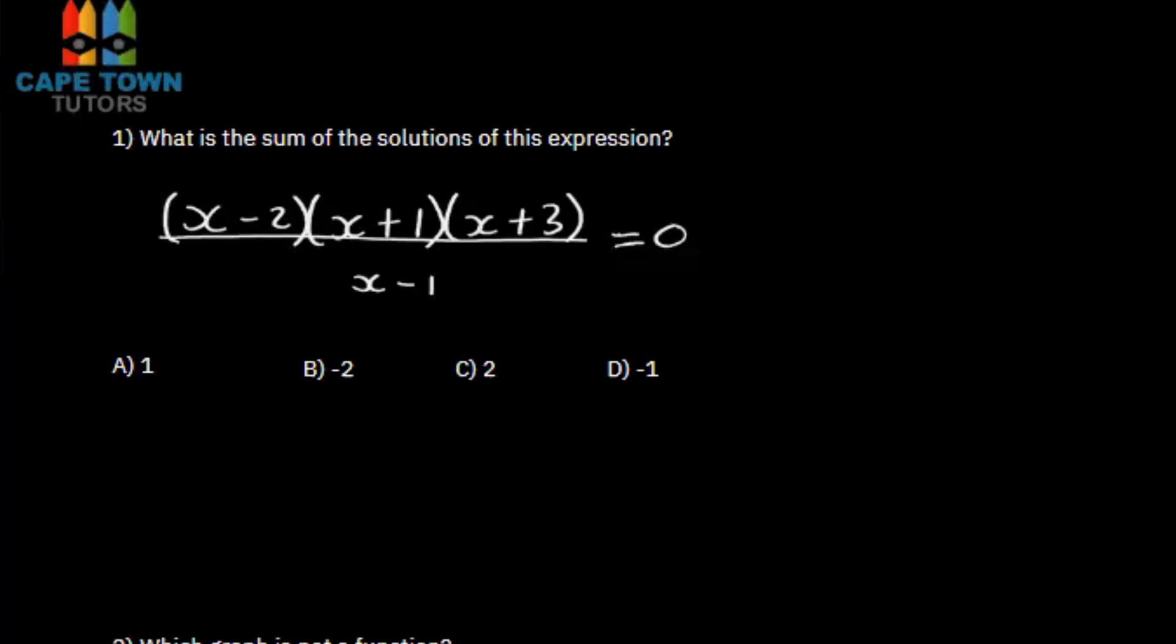So what we do in that case, we take the x minus 1 and multiply every term by that. Now there's one term on the left side of the equal sign and one term on the right side. So we multiply by x minus 1 the whole thing. x minus 1 here, and then on the other side, x minus 1.